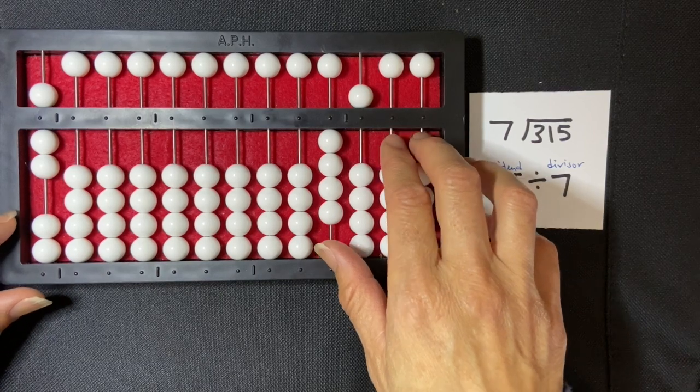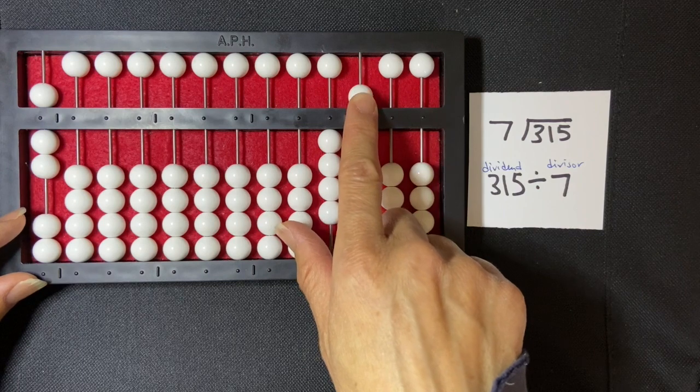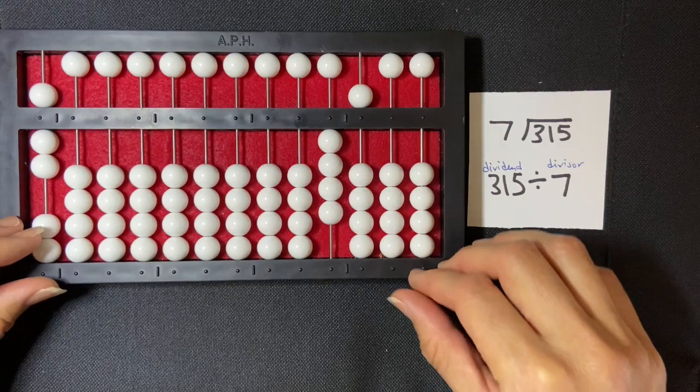So my quotient is 45, and that's how you do a division problem using the counting method on the abacus.